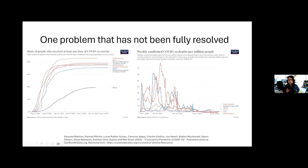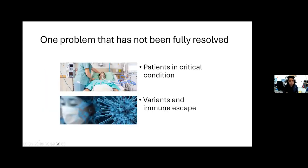As we know, at the final stage of 2020, the first vaccine against coronavirus was developed. After that date, the death rate decreased significantly. But we still have problems unresolved, like patients in critical condition. Whether vaccinated or not, you can fall into this condition, especially if you are not vaccinated. The other problem is the variants and immune escape of the virus.